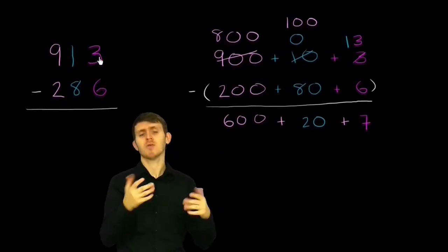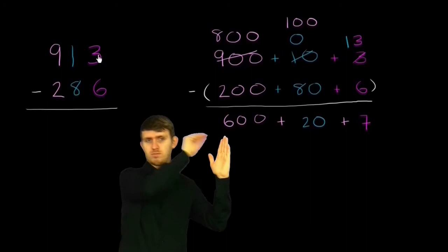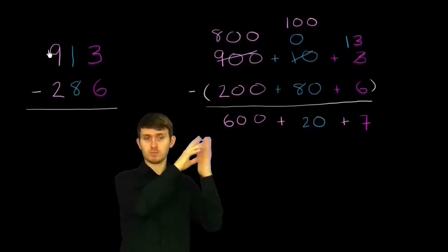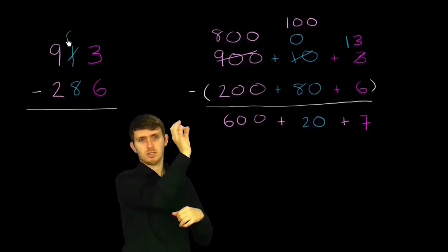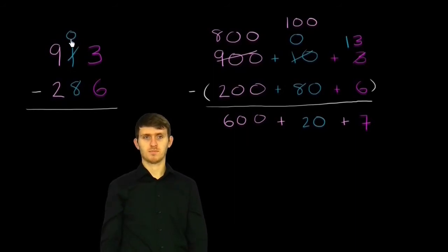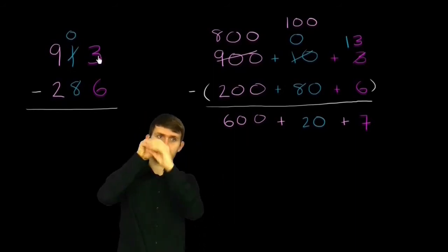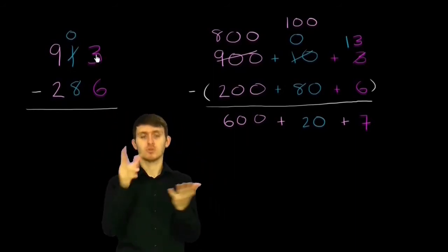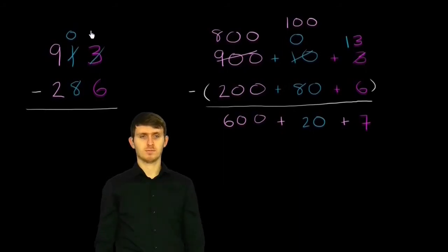So 6 is greater than 3. What do we do? Well, we can regroup from the tens place. We can take 10 from here, so we're left with 0 tens. And give that one 10 to the ones place. So you give 10 to the 3, you get it becomes 13.